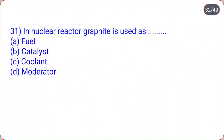In a nuclear reactor, graphite is used as? Options are fuel, catalyst, coolant, moderator. In a nuclear reactor, graphite is used as moderator.